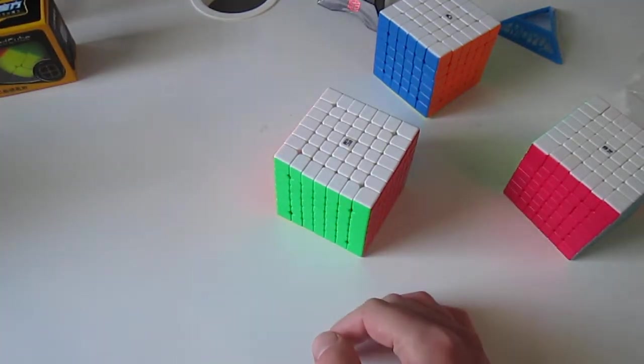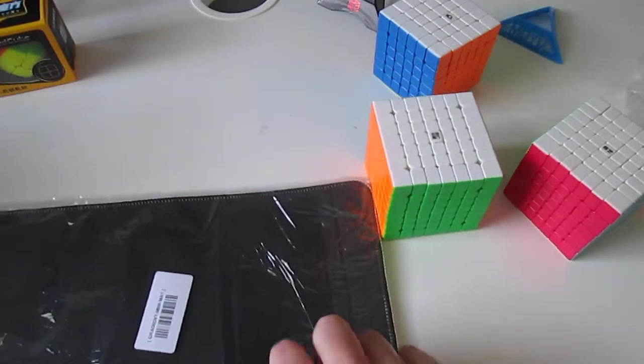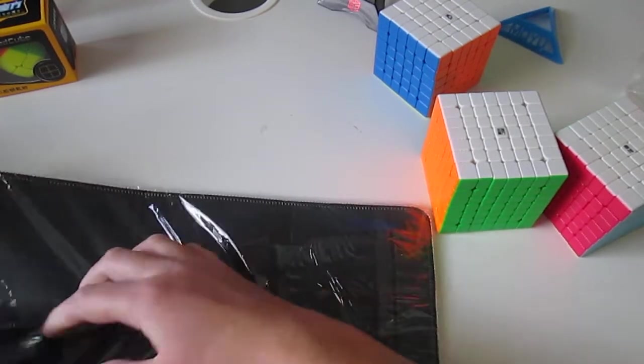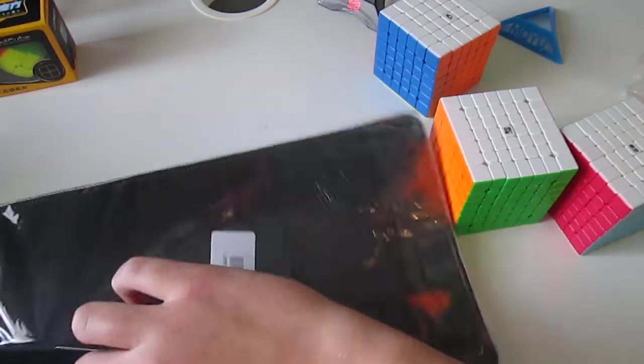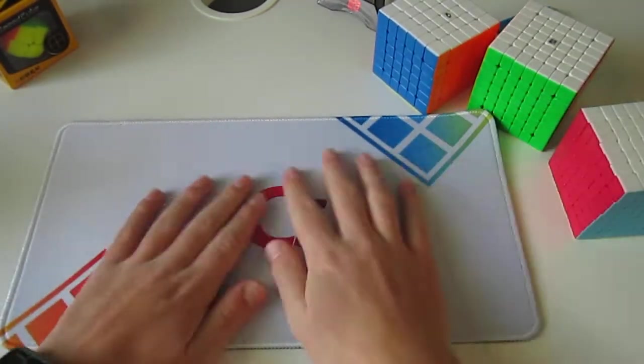So, yeah, let's bring out the Speedcube Shop Mini Mat. This is called the Gradient Mini Mat. It's... I thought it looked really cool. It feels thicker than I thought it would. But it's, like, nice and fabric-y on the outside. And then there's, like, rubber right there.